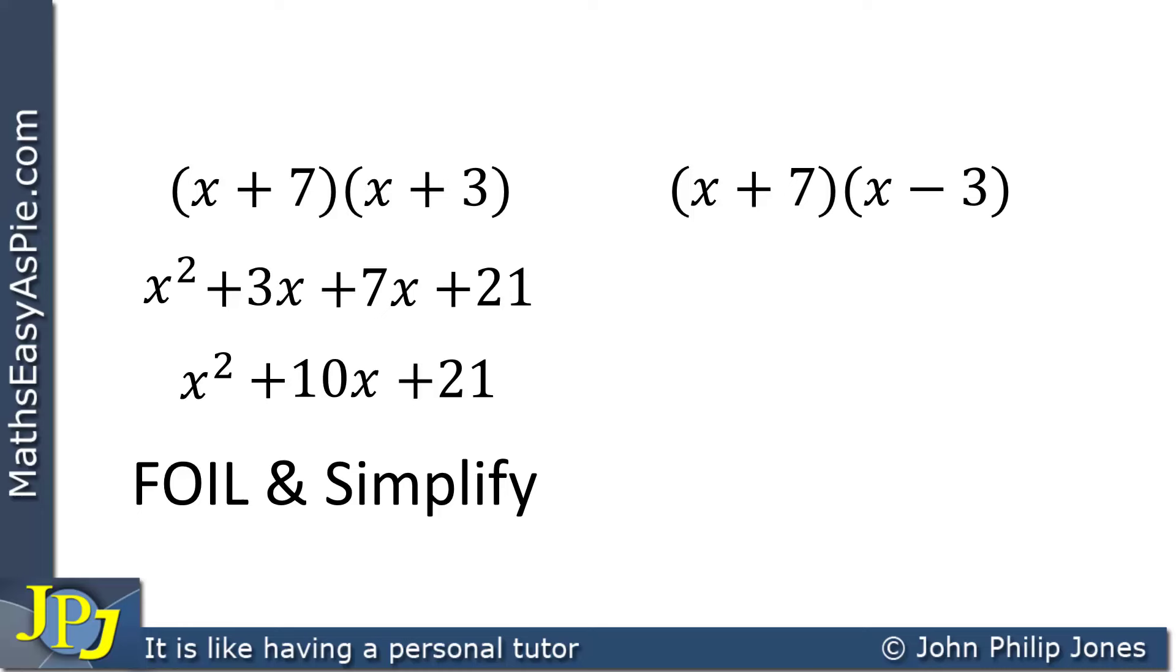We can then consider the next example, and we can see we look to the first, which is the x and the x. We multiply them together to give us x squared. We then look at the outside, which is the x and the minus 3. We multiply those together, and we get minus 3x.